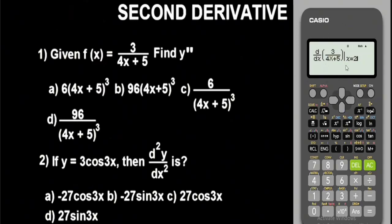Press equals to get the output. Since we are solving the second derivative, the next step is to store this output value as alphabet A on the calculator. Press shift, then STO, then look for alphabet A under the button and press it. It will indicate that this value has been stored as alphabet A on the calculator.